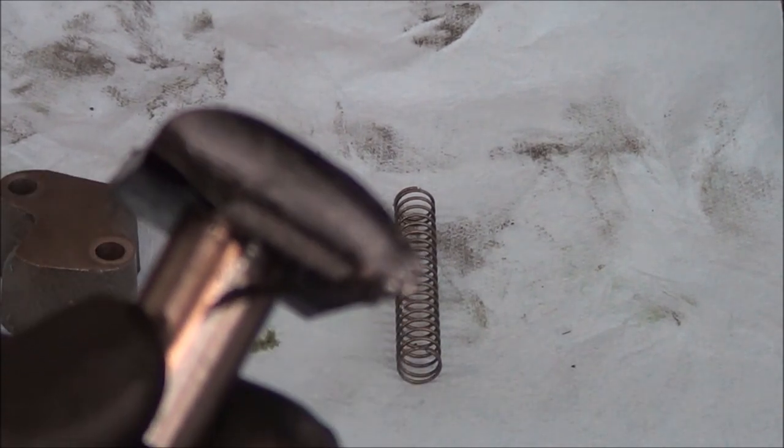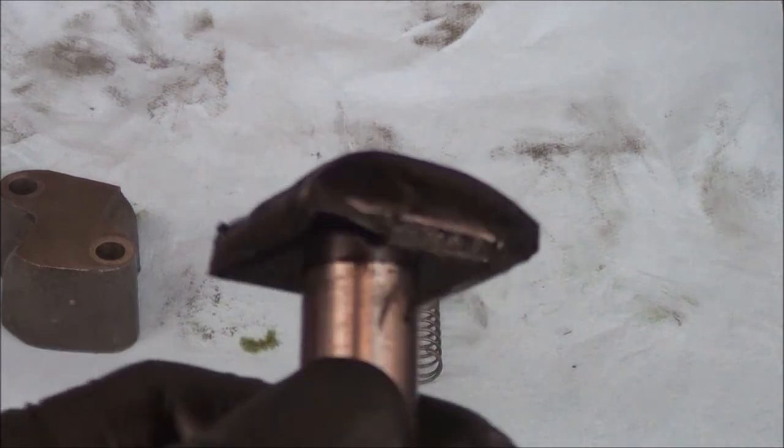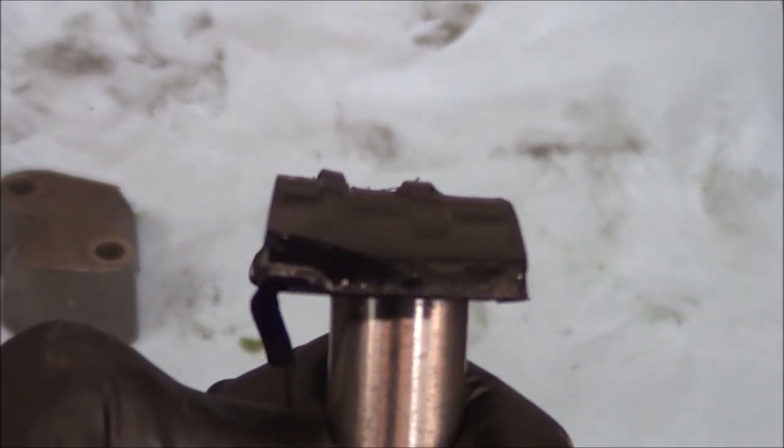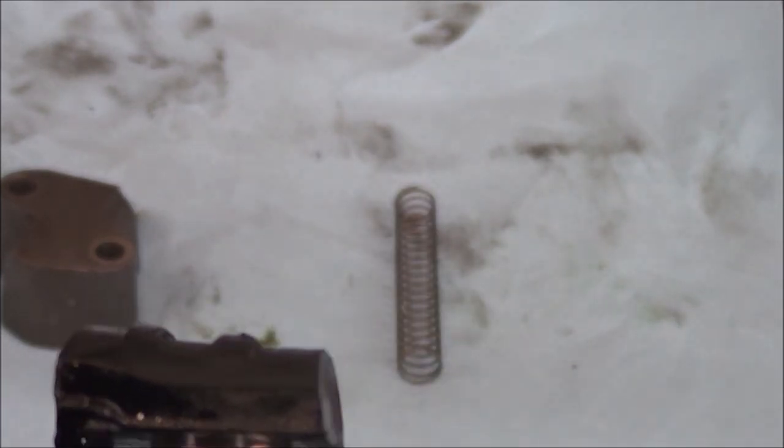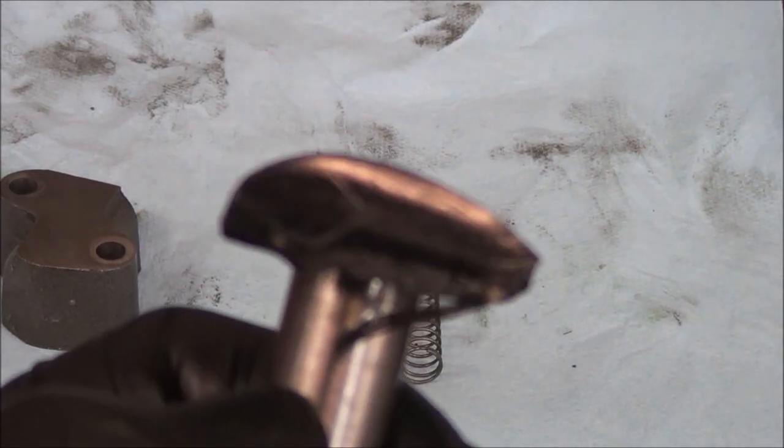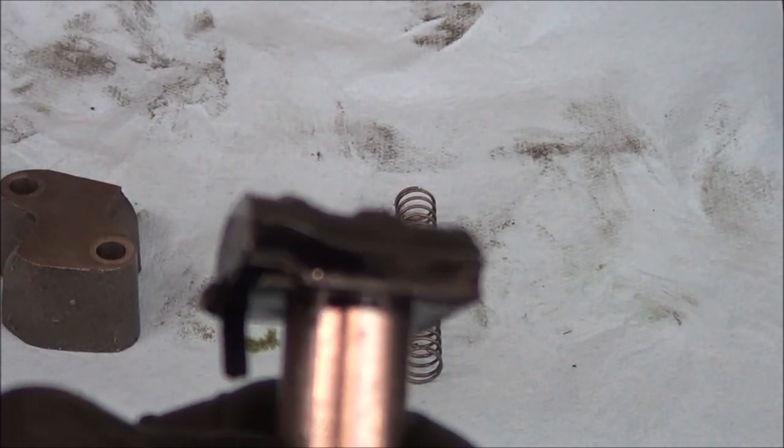And so this is what we found on the tensioner. See how uneven it is? I think it got caught somehow, or whatever happened to this, but it wasn't putting any tension on the chains anymore. And I'm thinking that's the reason why it jumped a tooth or two.